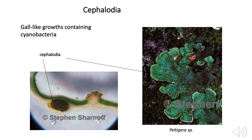Cephalodia are gall-like growths containing cyanobacteria, but they're found in mostly green algal lichens. So these lichens have both types of photobionts — algae in most of the thallus, and cyanobacteria in these little cephalodia — and they appear as dark little spots on the thallus. The best way to confirm them is to cut them open and look under the scope to see the cyanobacteria, but for our purposes just look for irregular dark areas on the thallus if you think you might have a lichen with cephalodia.